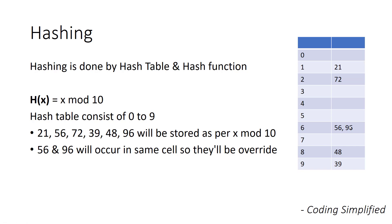So now you can understand that any time we search a value, we know exactly what its location is. If you search 39, we can directly get from the hash function that the location of 39 is at index 9, and it returns that value. When we have object values rather than primitives, we basically store the addresses — it generates a value from the hash function, stores the address, and we can directly get the address of that object and return it. This is how hashing works.